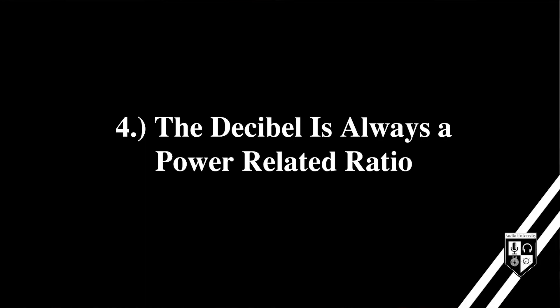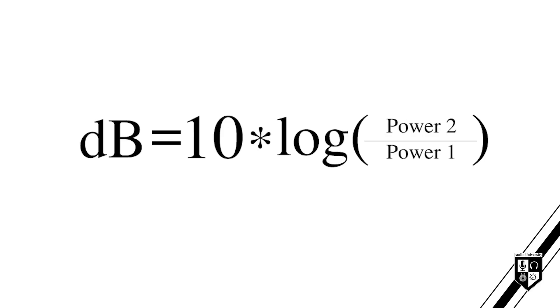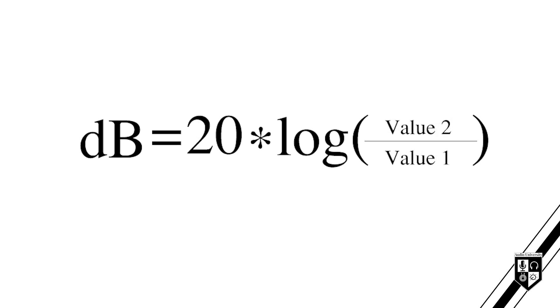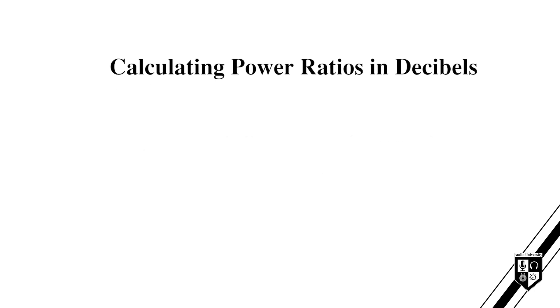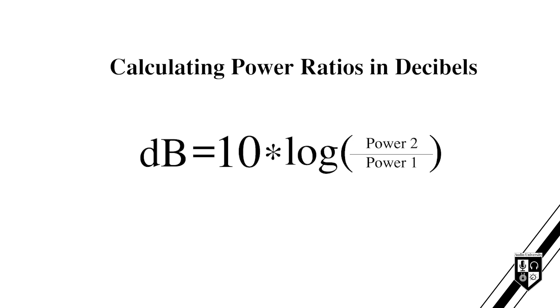For many, the most confusing aspect of the decibel is deciding which formula to use in a given situation. The formula for decibels is 10 times the log of Power 2 over Power 1. In some situations, however, you might see this formula: 20 times the log of Value 2 over Value 1. Why are different formulas used, and how do you choose which formula is appropriate? The decibel is a power-related ratio. When finding the ratio between two quantities of acoustical power or electrical power, use the basic formula.